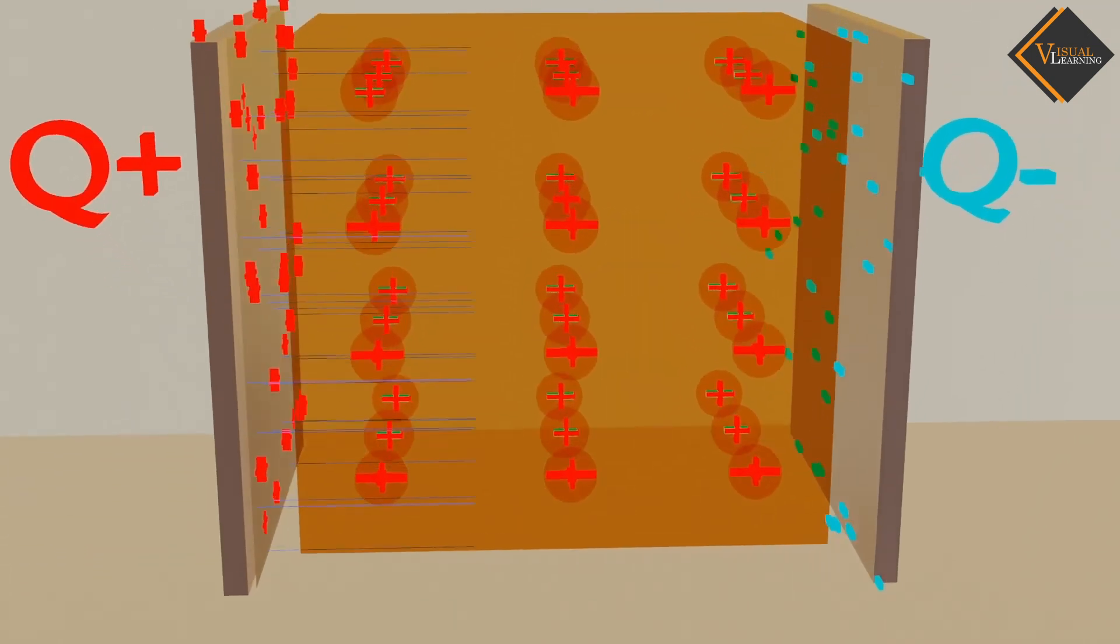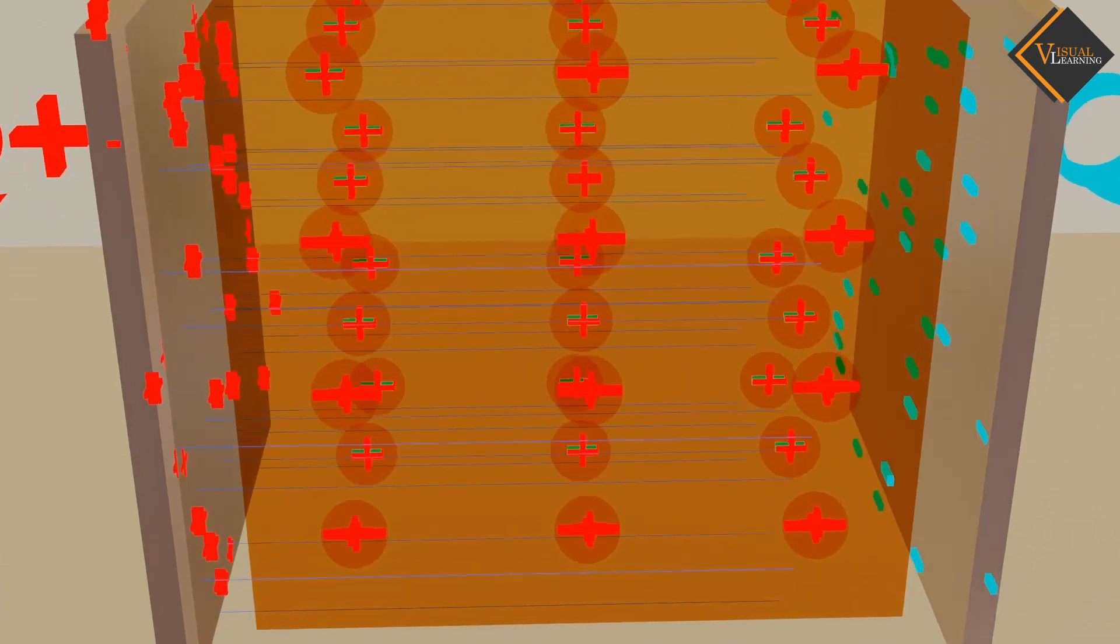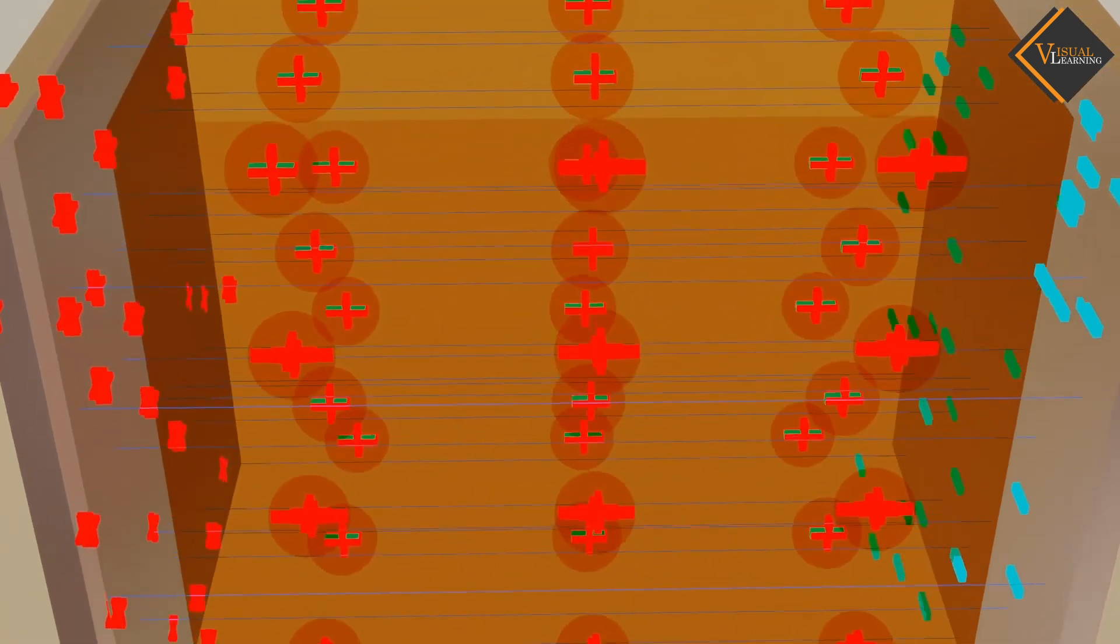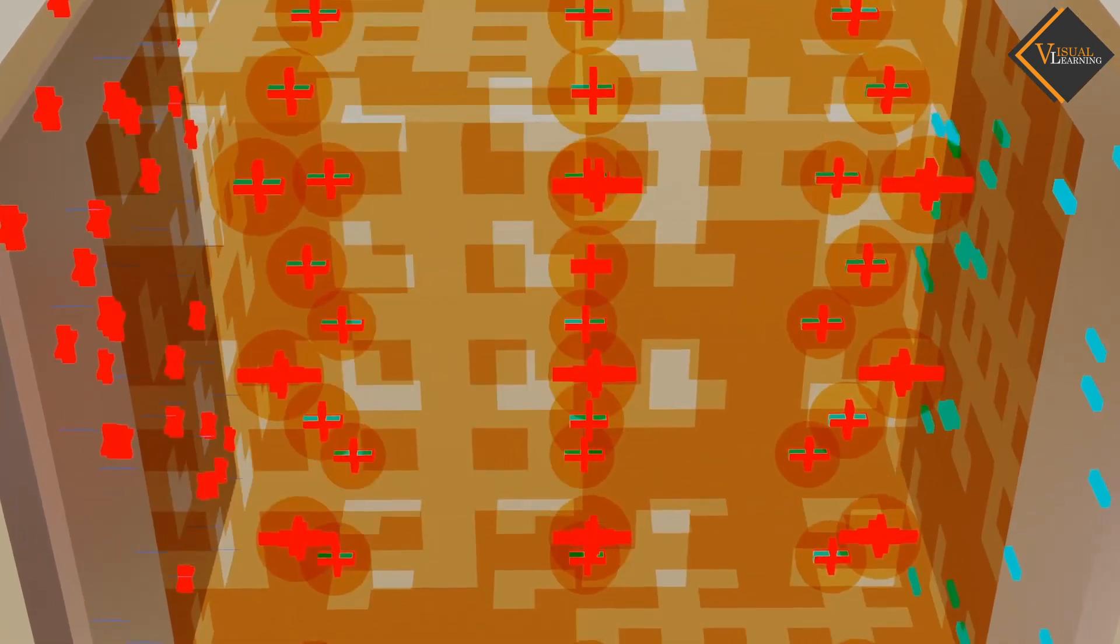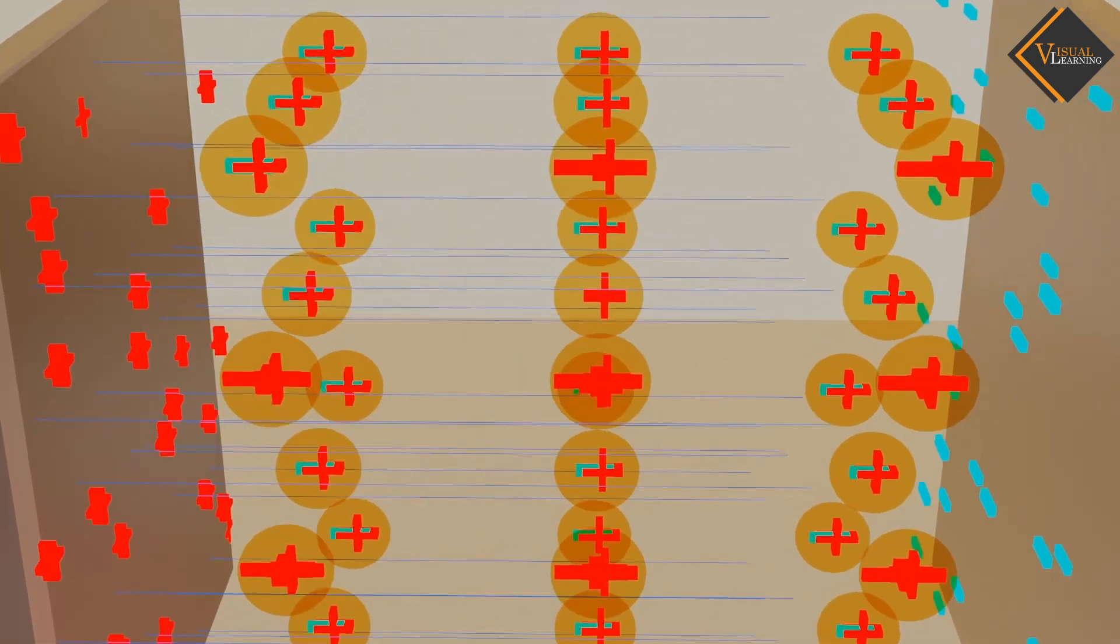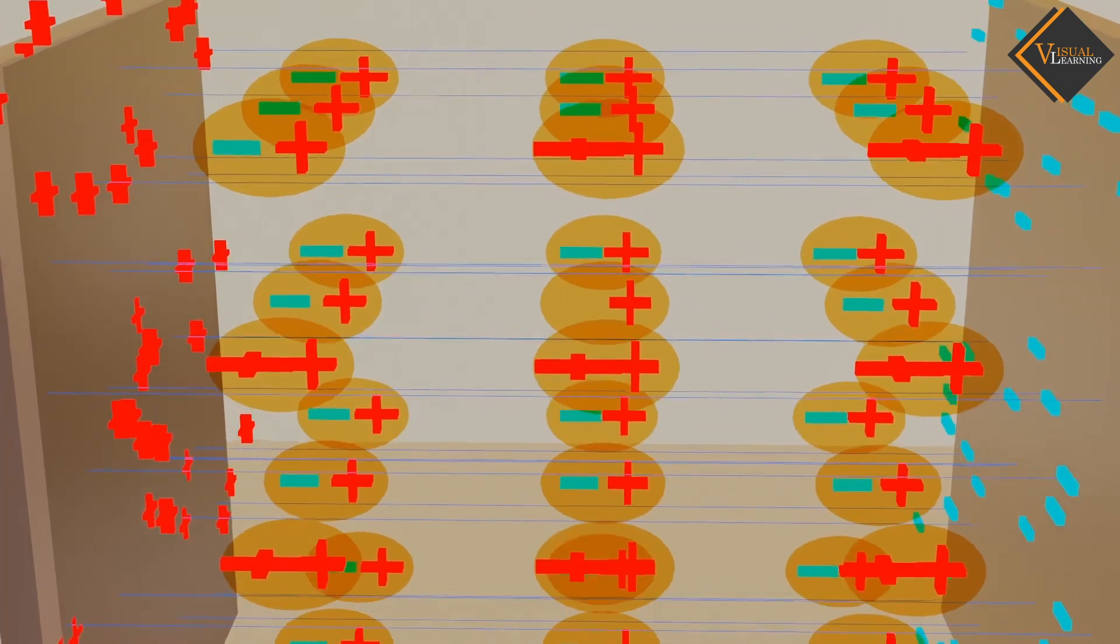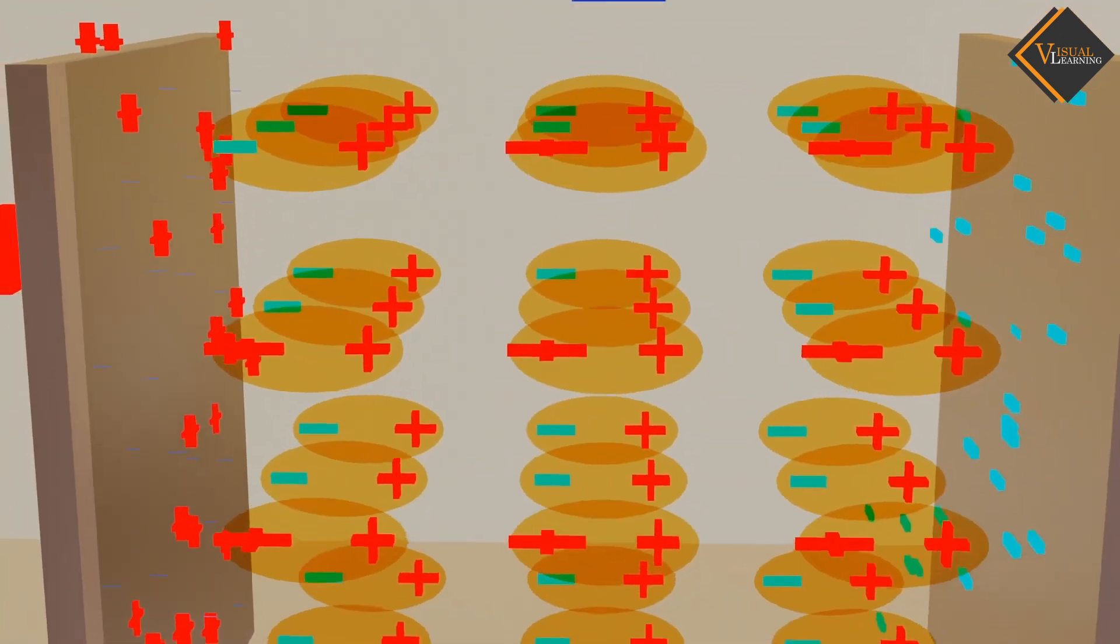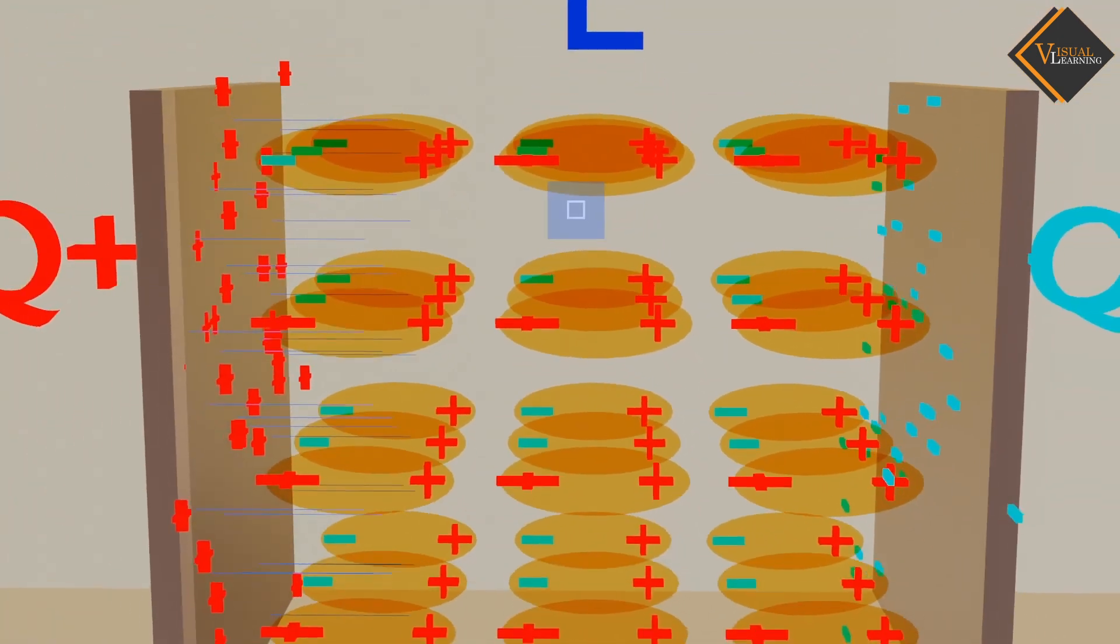Inside the dielectric slab, there are many neutral molecules and atoms. When an electric field is applied, the positive part of the molecules is attracted towards the negative charge and the negative part is attracted towards the positive charge.